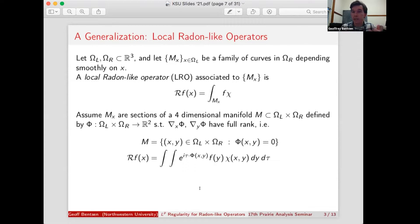So we have this manifold M, which is the zero set of our function phi. And then using some Fourier inversion, we can actually get an oscillatory integral representation of this radon-like operator. So the integral in y and in tau of e to the i, the inner product of tau with this defining function phi.